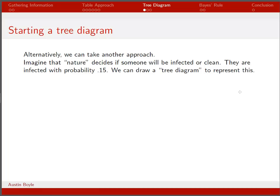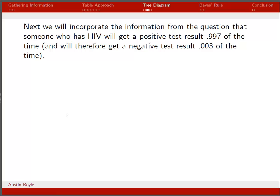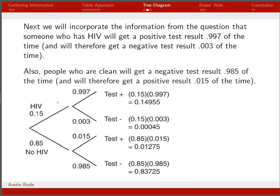There's another way to approach this problem using a tree diagram, which may be more intuitive for some people. First, nature decides if you're infected with probability 0.15, or no HIV with probability 0.85. If you have HIV, you get a positive test result 0.997 of the time, so a negative test must occur 0.003 of the time.